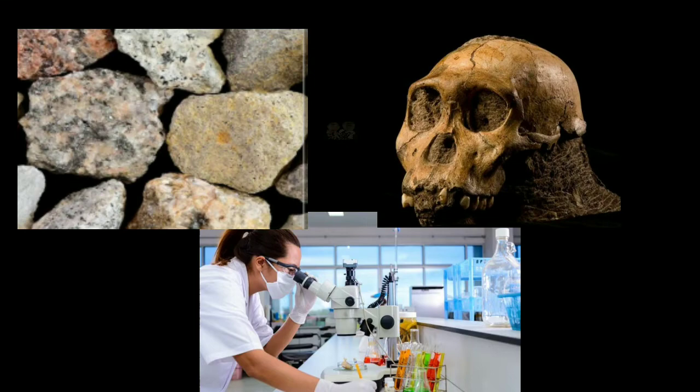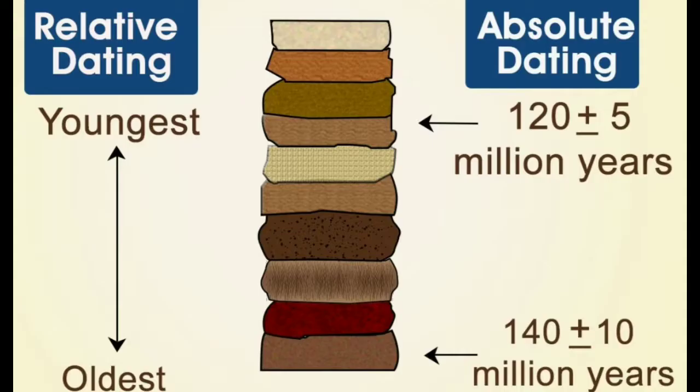Hello friends, today we are going to learn about dating methods. Dating methods or techniques are procedures used by scientists to determine the age of rocks, fossils, or artifacts. There are two types of dating methods: relative dating and absolute dating. Relative dating methods tell only if one sample is older or younger than another, while absolute dating methods provide an approximate date in years.